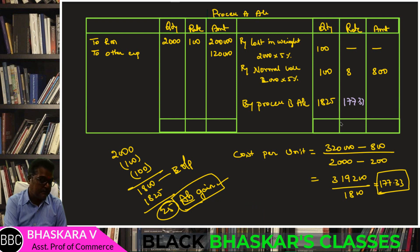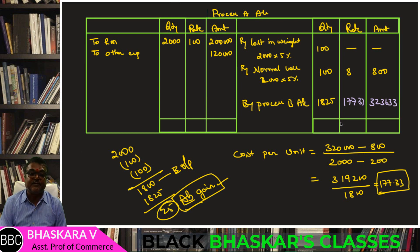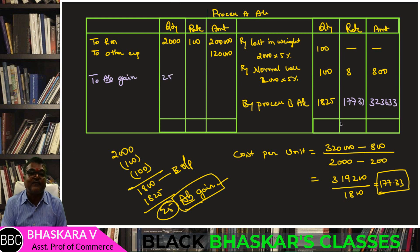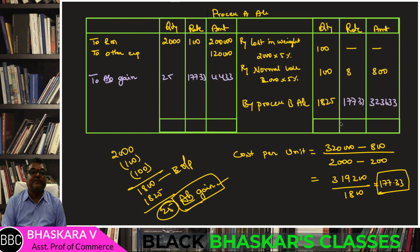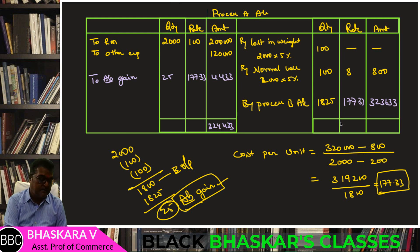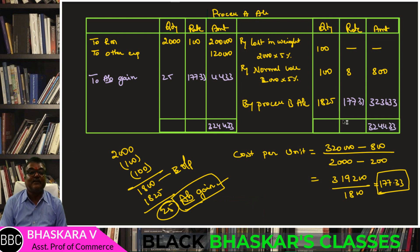Output of 1,825 units × Rs. 177.33 = Rs. 3,23,633. Abnormal gain: 25 units × Rs. 177.33 = Rs. 4,433. Credit side total: Rs. 800 (normal loss scrap) + Rs. 3,23,633 (Process B / output) = Rs. 3,24,433. The Process A account balances.